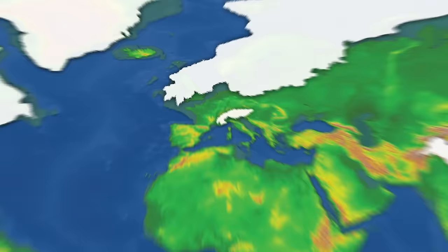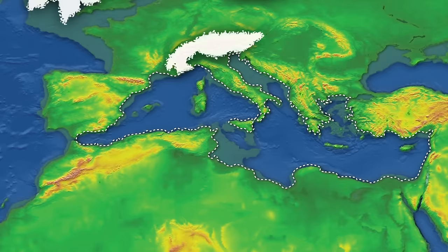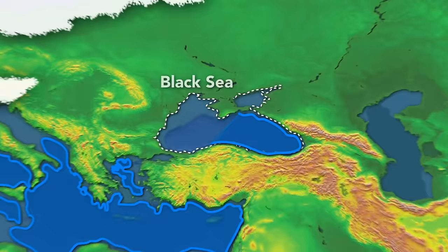Besides North America, another important ice sheet formed over Europe, spreading from the British Isles all the way into Siberia. Depending on sea levels and the state of plate tectonics, the Strait of Gibraltar would periodically open and close, cutting off the Mediterranean from the Atlantic Ocean. Without the influx of water from the ocean, sea levels within dropped, exposing even more land and leading to a breakup of the sea into a series of lakes. The effects of this sea level drop reached as far as the Black Sea, cutting it off entirely from the Mediterranean, leading to a substantial reduction in size.